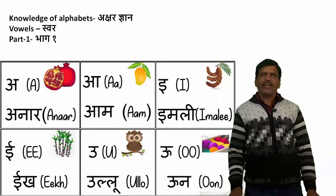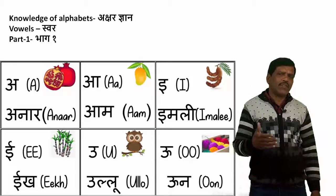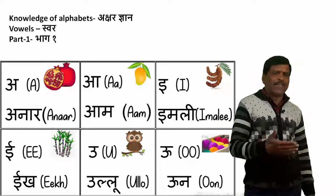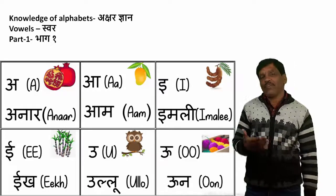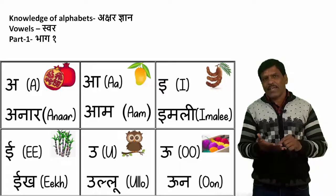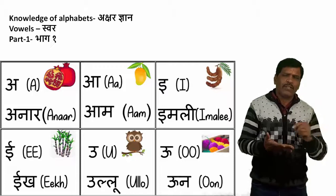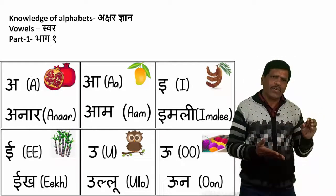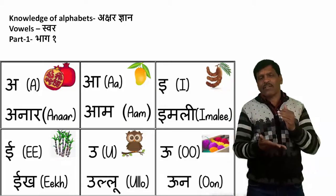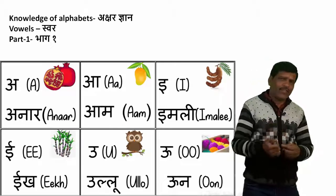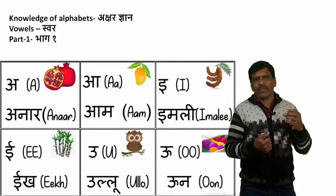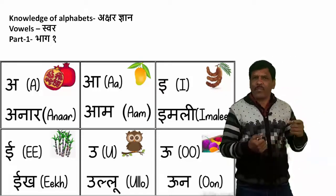Hello friends, namaskar! From here we are going to start our advanced course related to alphabets. We will start from vowels. Like in English alphabets there are vowels A, E, I, O, U and other alphabets are called consonants. In Hindi also there are few alphabets that are vowels. It starts from vowels and then after vowels come consonants.